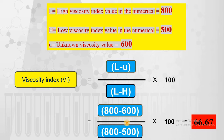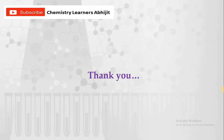This is very simple. If a problem is given, you have to identify the high value, low value, and unknown viscosity value. Again, the simple trick for this formula is L minus U divided by L minus H, in which U is on the upper side — this is also a helpful trick for this numerical. Subscribe to the channel. Thank you.